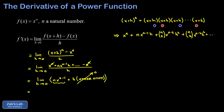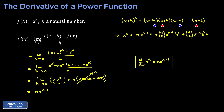When we take the limit as h goes to zero, that entire right tail of the series vanishes, and what we're left with is just the first piece. The result is n times x to the n minus one. Writing this in Leibniz notation, our conclusion is that d/dx of x to the n equals n times x to the n minus one.